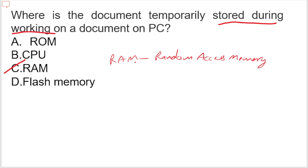Data or applications currently being used on a device are stored in RAM, loaded from the hard drive because data from RAM is loaded much faster than the hard drive. RAM is a volatile memory, which means it does not store data or instructions permanently — it stores data only temporarily.